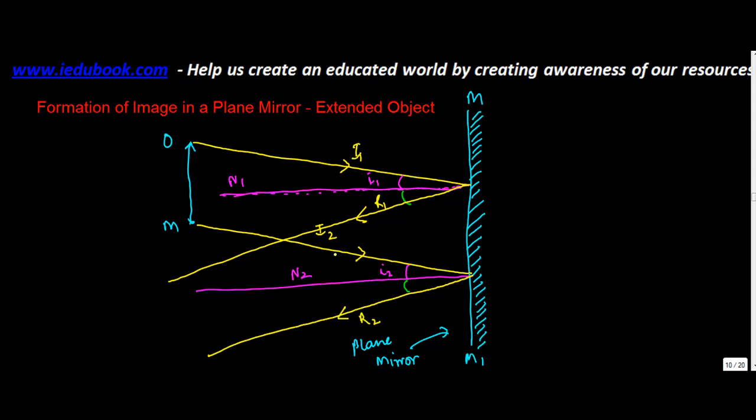Now if you notice again these rays are going back. So R1 and R2 will not meet.